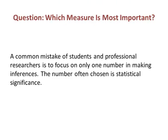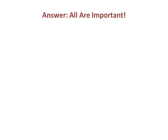A natural question is whether one measure is more important than others. This assumption is a common mistake of students and professional researchers alike. The tendency is to focus on only one number in making inferences, and the number often chosen is the p-value conveying statistical significance. People believe that if they have statistical significance, nothing else matters. However, this belief is not warranted and can lead to a misinterpretation of the results. In fact, all are important.